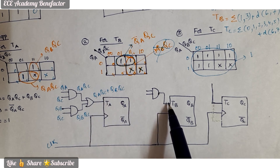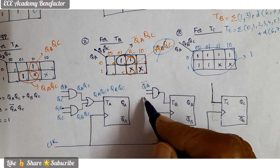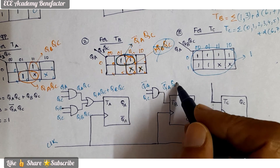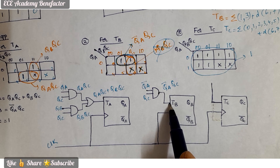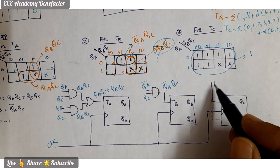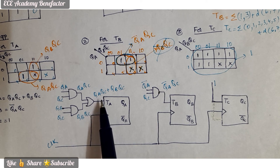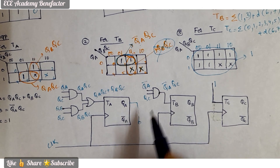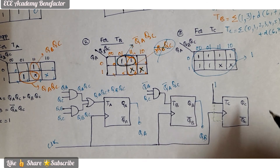For TB, the input is Q̄A·QC, so Q̄A and QC are given to an AND gate whose output Q̄A·QC is connected to the TB input. For TC, since TC = 1, the TC input is directly connected to logic 1. The outputs of the three flip flops are taken as QA, QB, and QC.